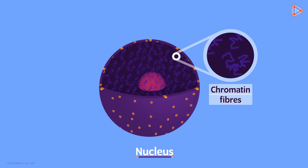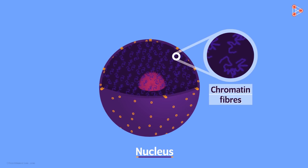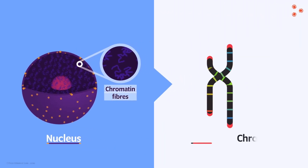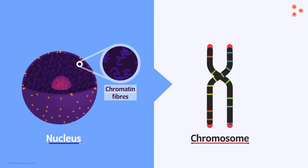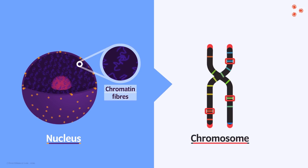When the cell has to divide, these long threads coil themselves to form a sophisticated and compact structure called the chromosome. It looks somewhat like this. These chromosomes are made up of smaller important segments. These functional units are called genes.